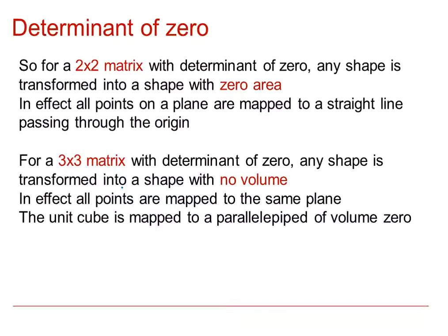If the determinant is 0, for a 2×2 matrix any shape is transformed into a shape with 0 area — in effect, all points on the plane are mapped to a straight line passing through the origin. For a 3×3 matrix with determinant 0, any shape is transformed into a shape with no volume; all points are mapped to the same plane, and the unit cube is mapped to a parallelepiped of volume 0.